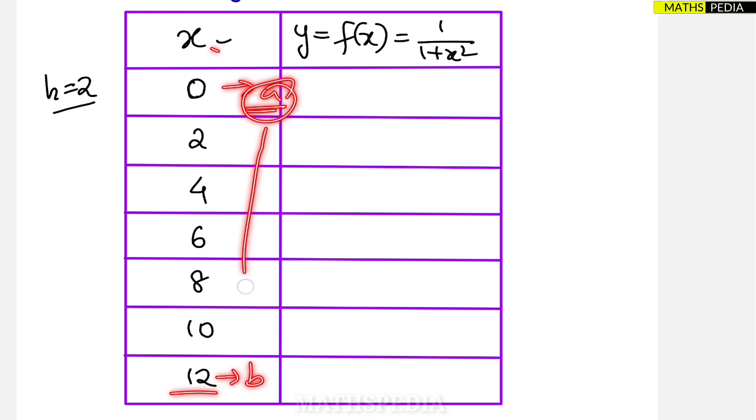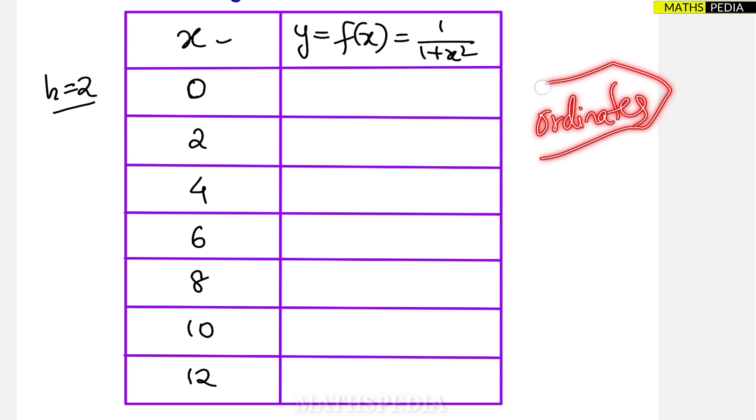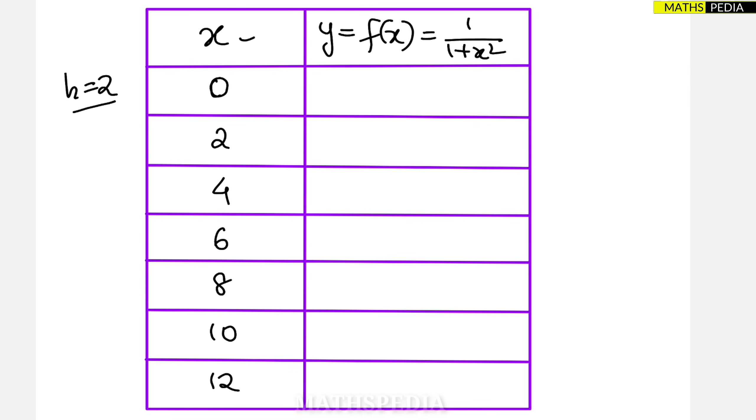So lower limit to upper limit we have arrived, but the thing is that we have jumped 2, 2, 2, 2, 2 intervals. So total how many intervals are there? 6 intervals you can see, so 1, 2, 3, 4, 5, 6. How many points are there? 7 points will be there. So points are basically called as ordinates in this numerical integration, so we will form y table.